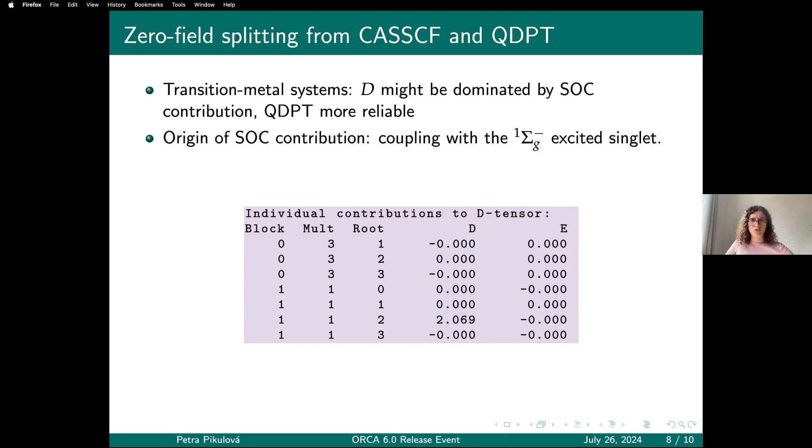Also what is nice is that in the output, you get this printing of contributions from the states to your property. This would be the contributions to the spin-orbit contribution to zero-field splitting, and you see that most of it is coming from this one excited singlet root.